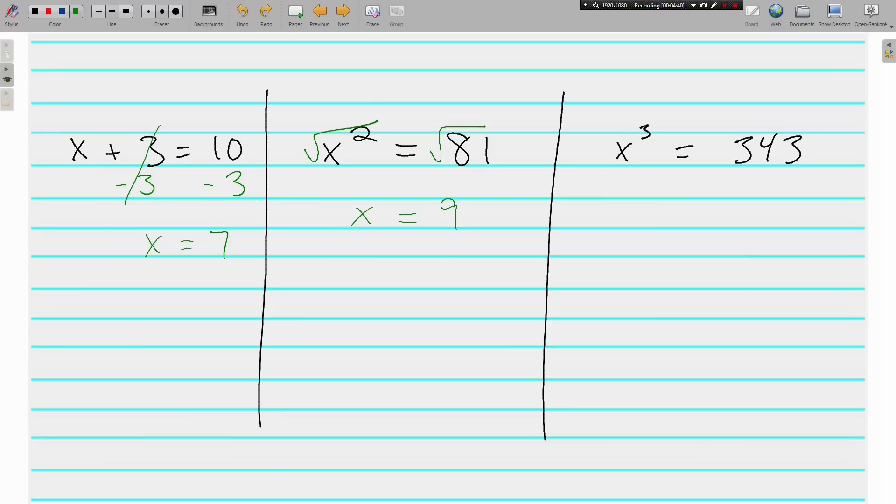Same principle applies if it's x to the third power. I don't care what x to the third power is. I want to know what x is. So I'm going to find the cubed root of x cubed, which is x. And what I do to one side, I must do to the other side. The cubed root of 343 is 7.